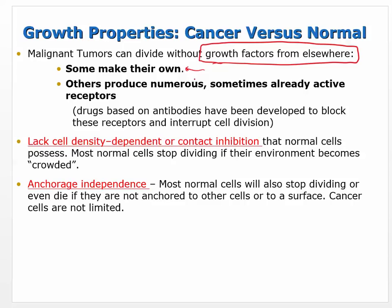If a cell is supposed to have 10 receptors but produces 1,000, they'll be much more sensitive to any growth factors that show up, causing more rapid growth. In general, either they make their own growth factors or their growth factor receptors are just constitutively active. Drugs based on antibodies — monoclonal and polyclonal — have been developed to block these receptors and stop the growth signal.